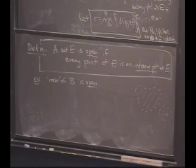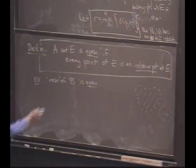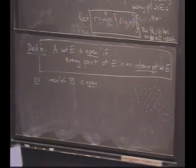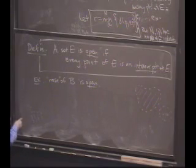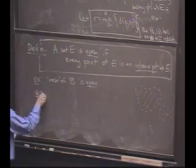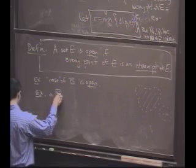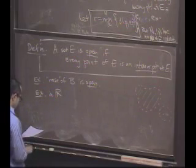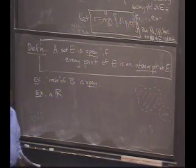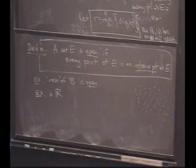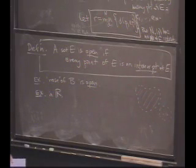How many people say yes? How many people say no? A lot of you are saying yes — so construct an example. Probably most useful would be to know in R, the real line, what the open sets look like.